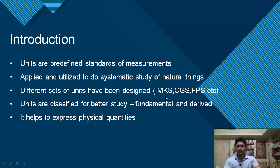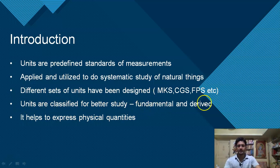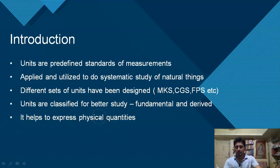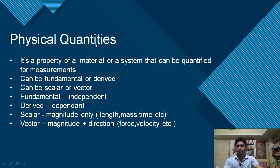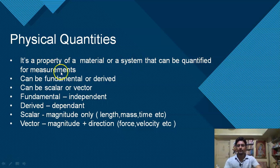Length, mass, and time are the three basic fundamental physical quantities. Units are classified for better study — into fundamental and derived — and this helps to express physical quantities. A physical quantity is a property of a material or a system that can be quantified for measurement.